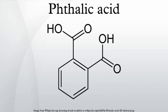Phthalic acid was first obtained by French chemist Auguste Leron in 1836 by oxidizing naphthalene tetrachloride. Believing the resulting substance to be a naphthalene derivative, he named it naphthalic acid. After the Swiss chemist Jean-Charles Galissard de Marignac determined its correct formula, Leron gave it its present name.